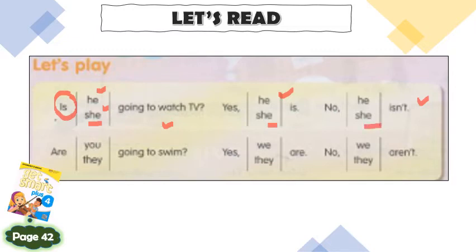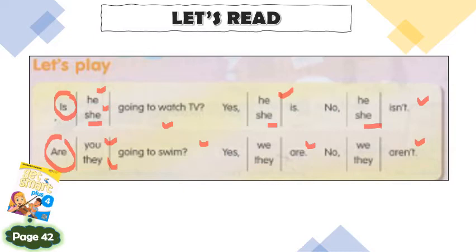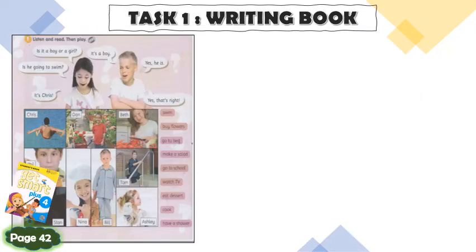'No, she isn't.' What about 'you' and 'they'? For you and they, the verb to be used is 'are.' Let's read: 'Are you going to swim?' The answer is 'Yes, we are' or 'No, we aren't.' If the question asks about you, your answer can be 'we' or 'I,' depending on the situation. 'Are they going to swim?' — 'Yes, they are' or 'No, they aren't.'